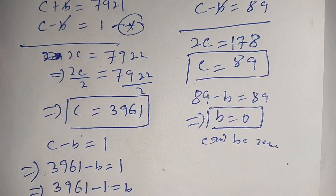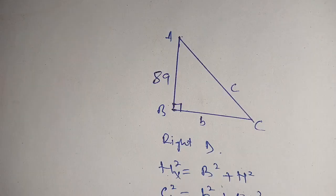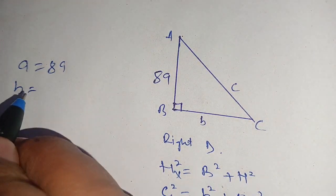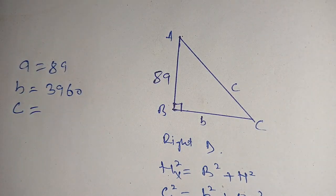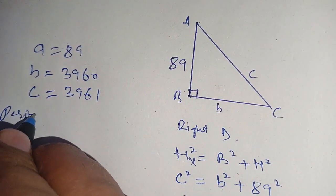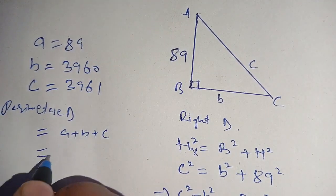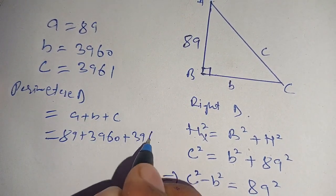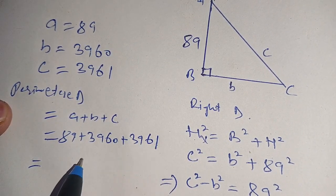Using the first case, we have a = 89, b = 3960, and c = 3961. The perimeter of this triangle is equal to a + b + c, which gives 89 + 3960 + 3961.